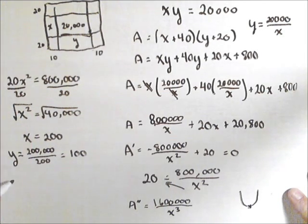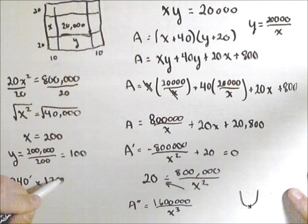So to x we had to add 40. So the minimum was going to be 240 feet by, you have to add 20 to y, 120 feet. So there's our minimum space.